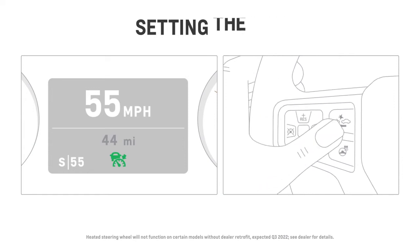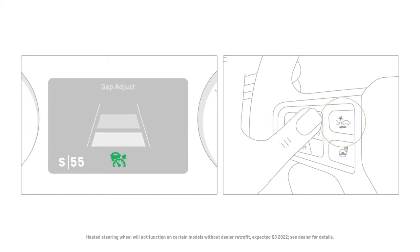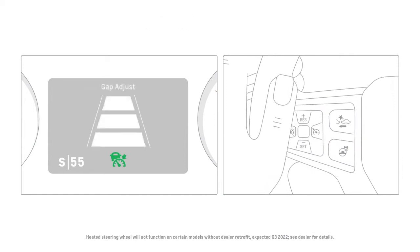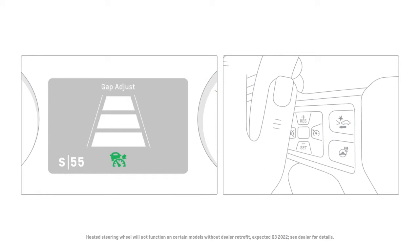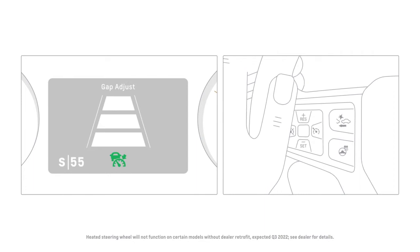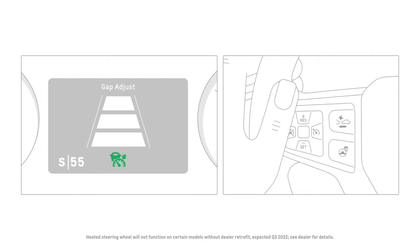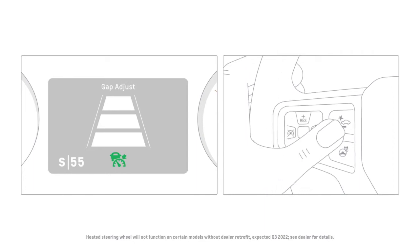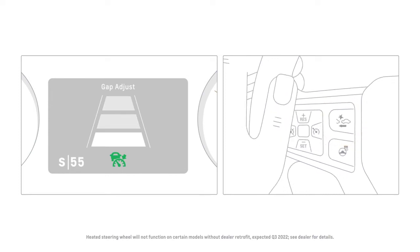When you first press the Gap Setting button, the currently selected gap setting displays briefly on the instrument cluster and Head Up Display, or HUD, if equipped. Each press of the button cycles through the far, medium, and near gap settings.